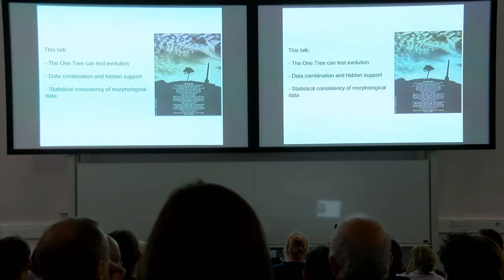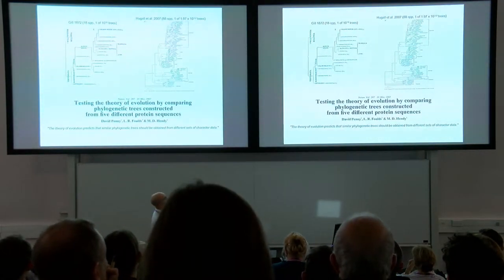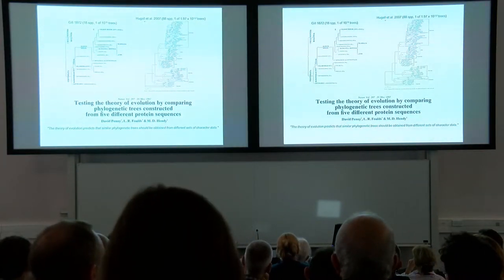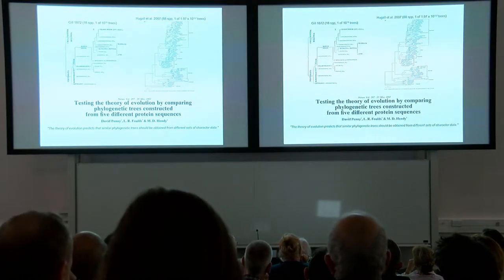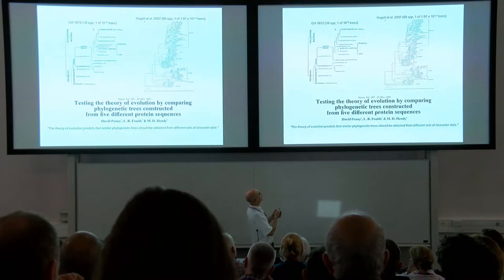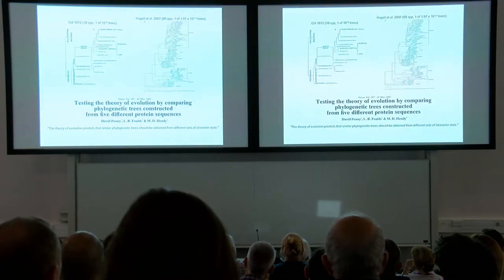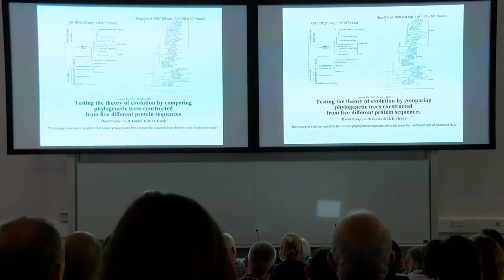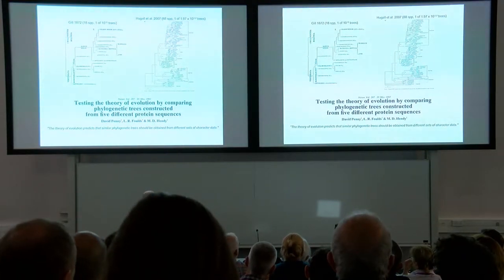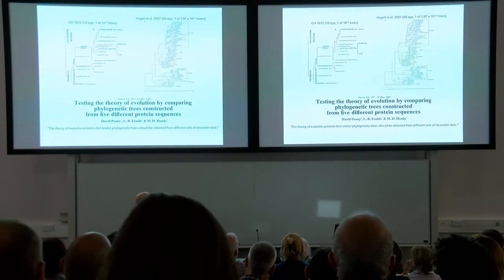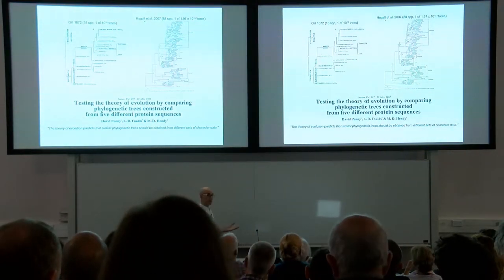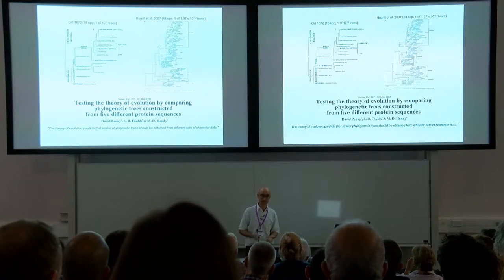If we look at modern trees — like this concatenation of nuclear DNA from Hugal et al. 2007 — in the essential details of vertebrate phylogeny, it is essentially the same. I'd like to draw your attention to a paper from 1982 by Penny, Foulds and Hendy, in which they state that the theory of evolution predicts similar phylogenetic trees should be obtained from different sets of character data. They were looking at amino acid sequences from five different proteins, but the same principle applies to comparing a comparative anatomically derived phylogenetic tree and one derived from molecular data that Theodore Gill didn't know existed in 1872. And they're the same.